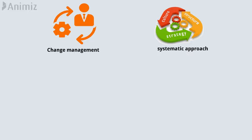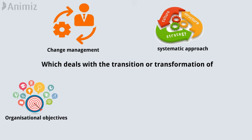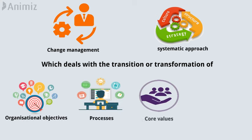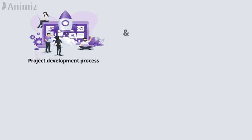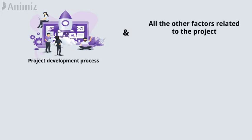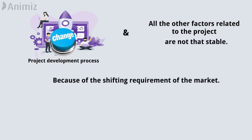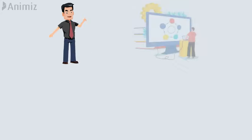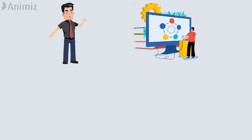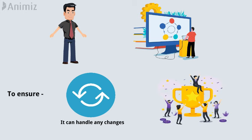Change management is the systematic approach which deals with the transition or transformation of different organizational objectives, processes, core values, or technologies. The project development process and all the other factors related to the project are not that stable, and have to be changed every so often because of the shifting requirement of the market. That's why project managers have to organize a process of change management in their development strategy, to ensure that it can handle any changes that come in the way of their development process being a success.